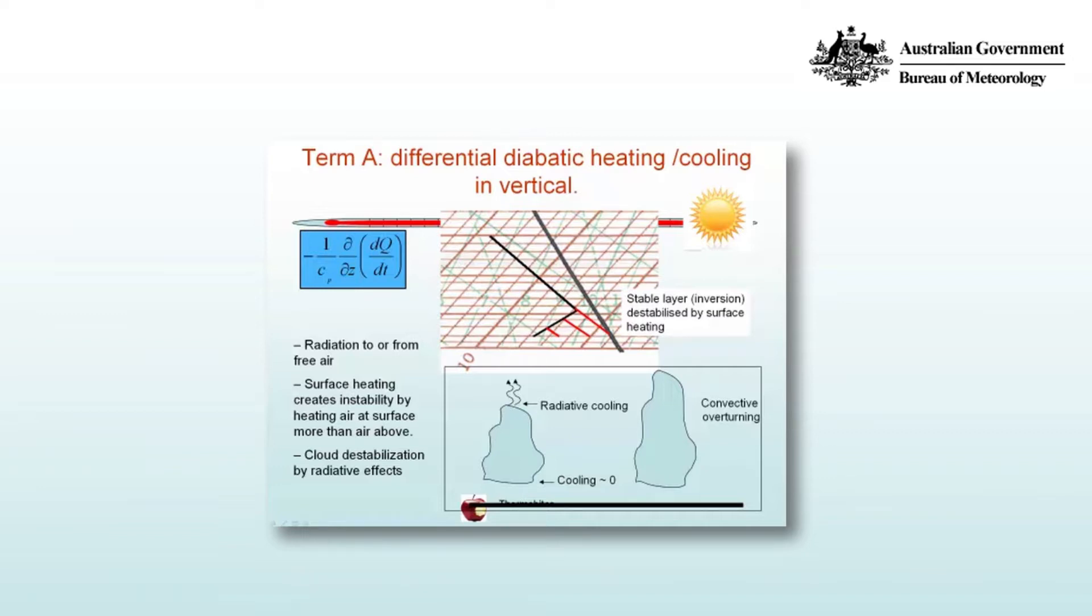And so we move from a situation over time where we have an inversion with temperature increasing with height to a dry adiabatic layer where the temperature decreases with height.